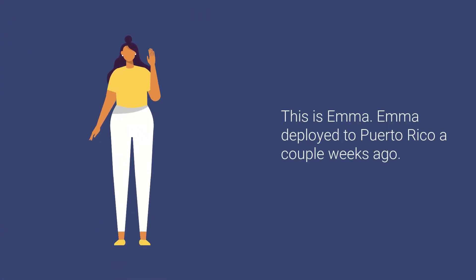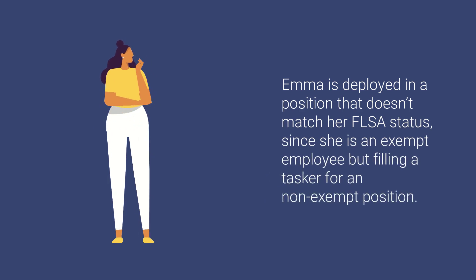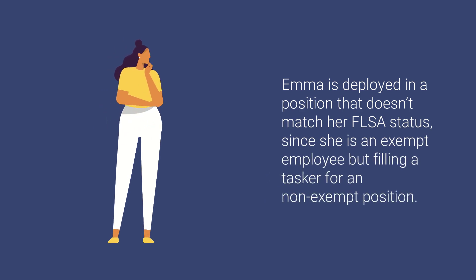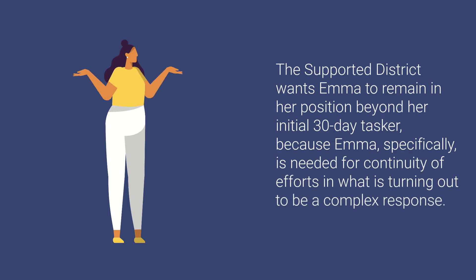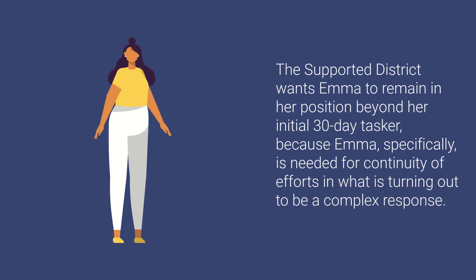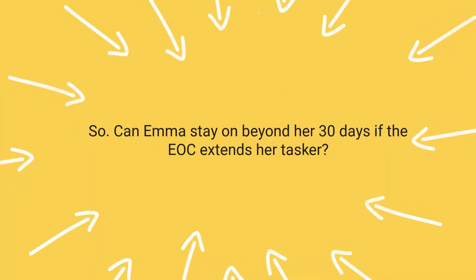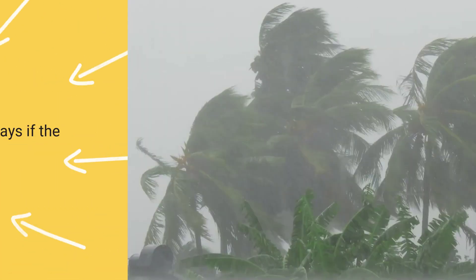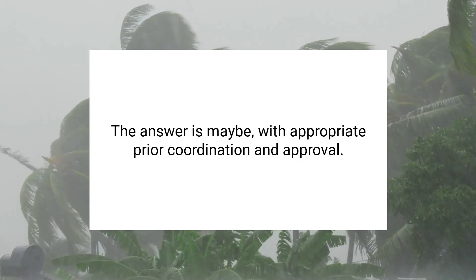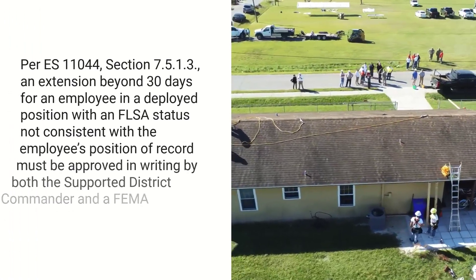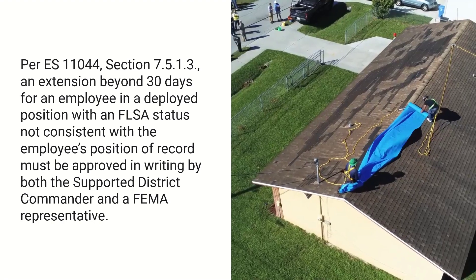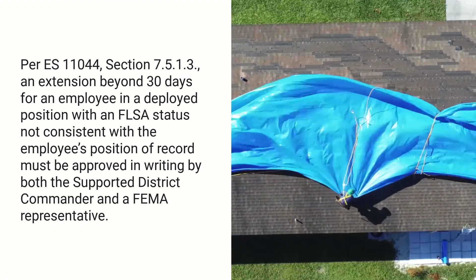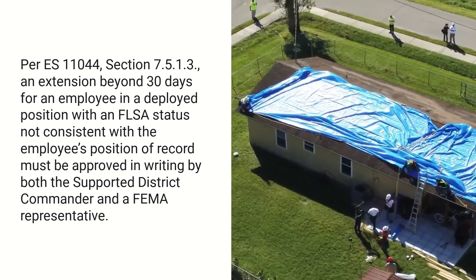This is Emma. Emma deployed to Puerto Rico a couple weeks ago. She is an exempt employee but filling a tasker for a non-exempt position. The supported district wants Emma to remain in her position beyond her initial 30-day tasker, because Emma specifically is needed for continuity of efforts in what is turning out to be a complex response. So can Emma stay on beyond her 30 days if the EOC extends her tasker? The answer is maybe, with appropriate prior coordination and approval. Per ES-11044, section 7513, an extension beyond 30 days for an employee in a deployed position with an FLSA status that is not consistent with the employee's position of record must be approved in writing by both the supported district commander and a FEMA representative.